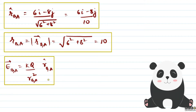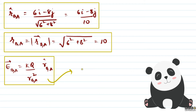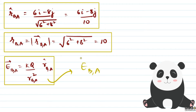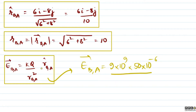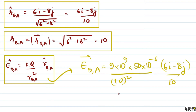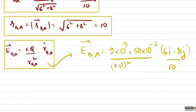So now we can understand that the electric field at B because of A can be found. Electric field at B because of A will be: K equals 9 into 10 to the power 9, Q is given as 50 micro coulomb so 50 into 10 to the power minus 6, upon r_BA squared — r_BA was 10, so we square it — and then multiplied by the unit vector (6i cap minus 8j cap) upon 10.